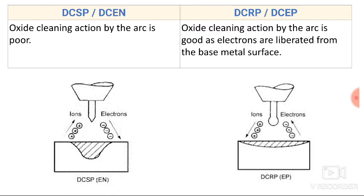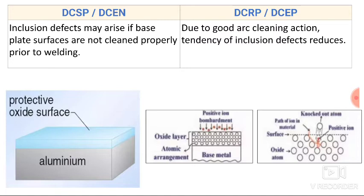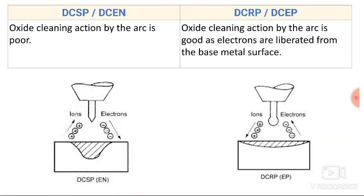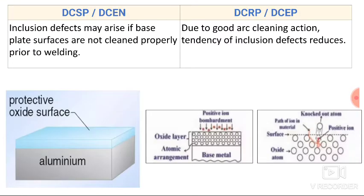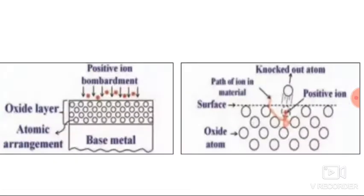In reverse polarity, the electrons are liberated from the surface of the base plate and positive ions from the electrode are bombarded over the surface of the base plate. This ion bombardment is why there is good cleaning action in reverse polarity, reducing the tendency of inclusion defects.